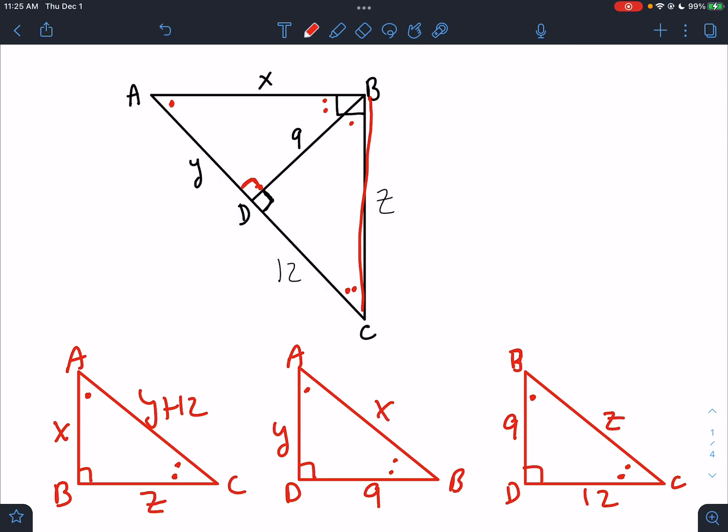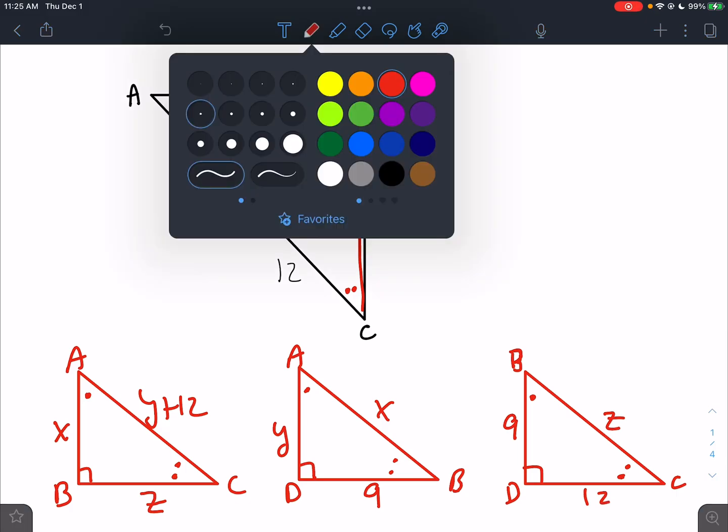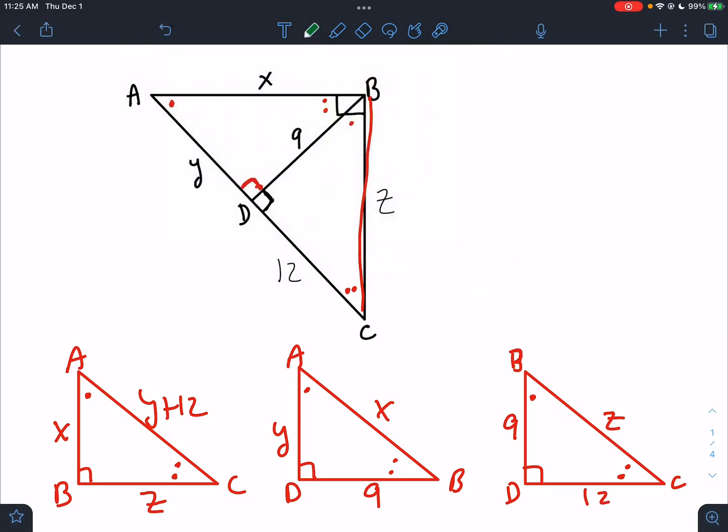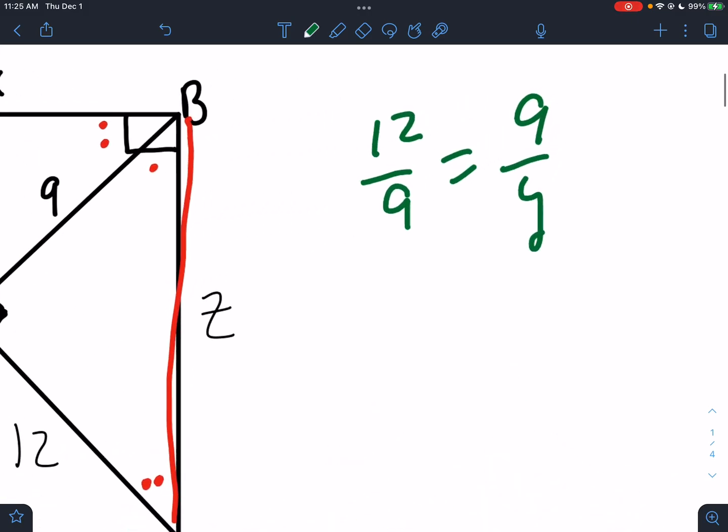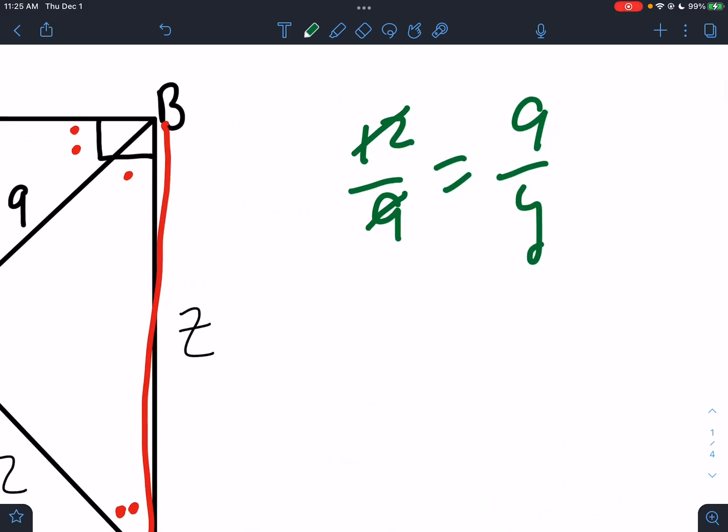So we need to set up proportions. And we know the most sides on this last triangle. So we're probably going to be using that one a lot. So let's just do some setups that work. Let's say we're trying to solve. If we use 12 over nine, I could do nine over Y. Bottom over bottom equals left over left. If I'm going to solve this, I'm going to reduce first. 12 ninths is four thirds. So 4Y equals 27 and Y equals 27 fourths.